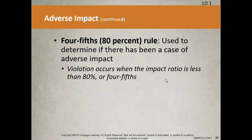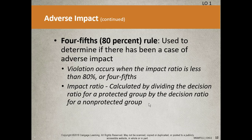Adverse impact, on the other hand, is unintentional. It occurs when members of a particular race, sex, or ethnic group are unintentionally harmed because they're hired, promoted, or trained at substantially lower rates than others. The four-fifths rule is a simple ratio used to determine adverse impact. If 20 out of 100 Black applicants are hired (20%) but 60 out of 100 white applicants are hired (60%), the impact ratio is 0.2 divided by 0.6, which is 33% — less than 80%, so adverse impact has occurred.